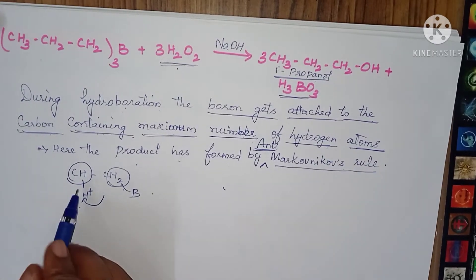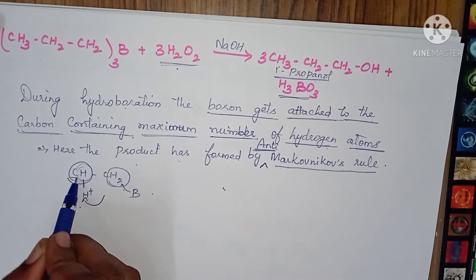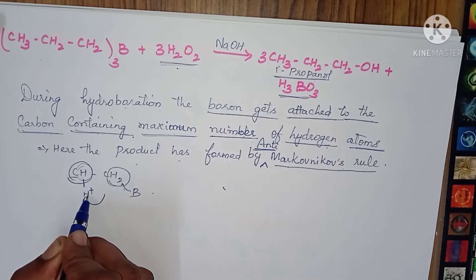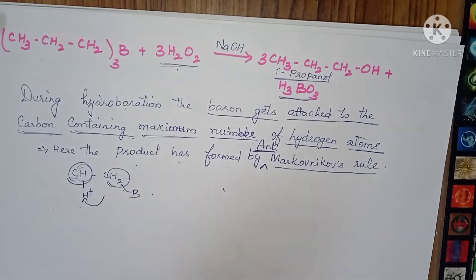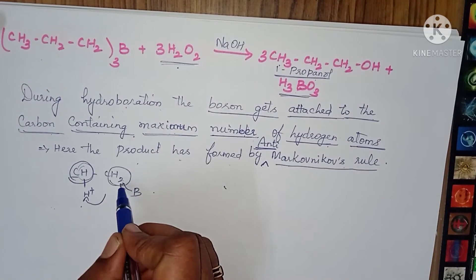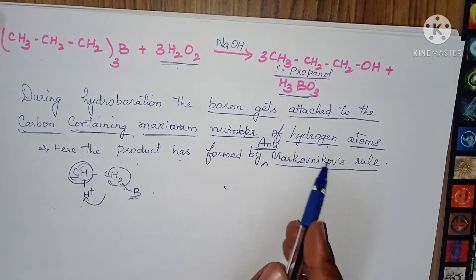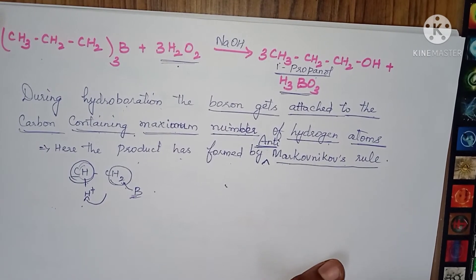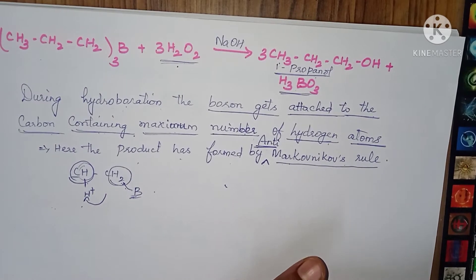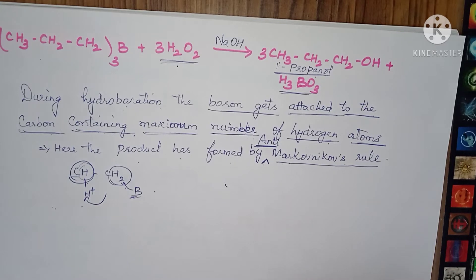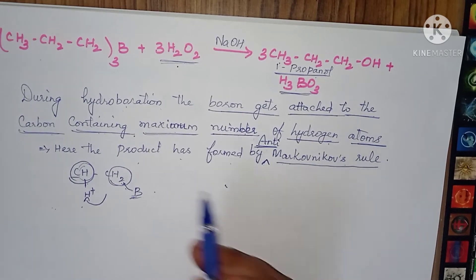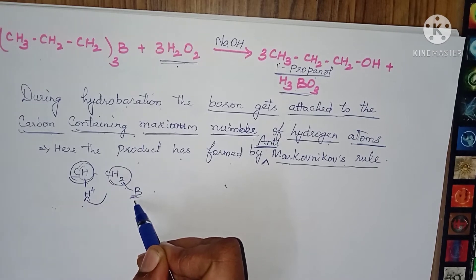Hope you got it. Markovnikov's rule: wherever the carbon has fewer hydrogen atoms, the H+ ion attaches there. That is Markovnikov's rule. Anti-Markovnikov's rule: wherever the carbon has the maximum number of hydrogen atoms, boron attaches there — that place has minimum on one side and maximum on the other side. So that is called anti-Markovnikov's rule. Hope you are clear on what Markovnikov's rule and anti-Markovnikov's rule mean.